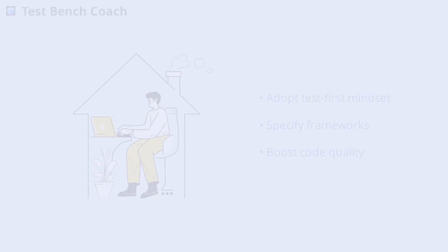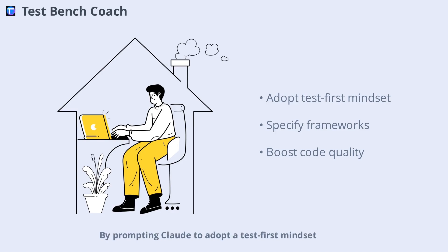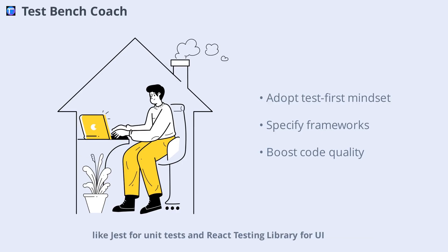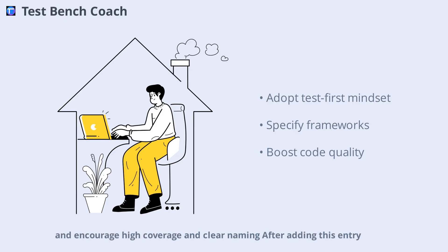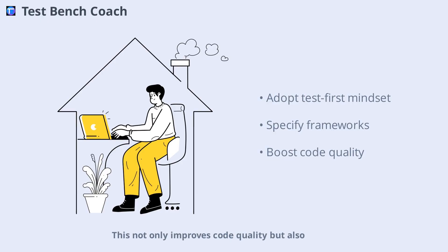Testing is often overlooked in the rush to ship features, but the Test Bench Coach entry makes it a priority. By prompting Claude to adopt a test-first mindset, you ensure every new feature or bug fix comes with appropriate tests. Specify your frameworks — like Jest for unit tests and React Testing Library for UI — and encourage high coverage and clear naming. After adding this entry, Claude began suggesting and writing tests automatically, even for edge cases I might have missed.